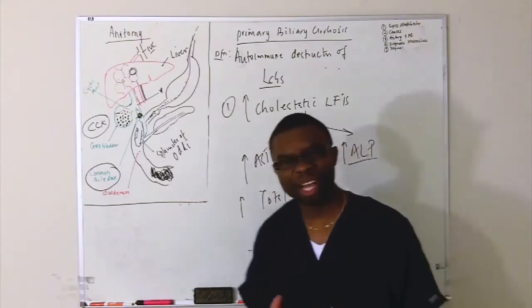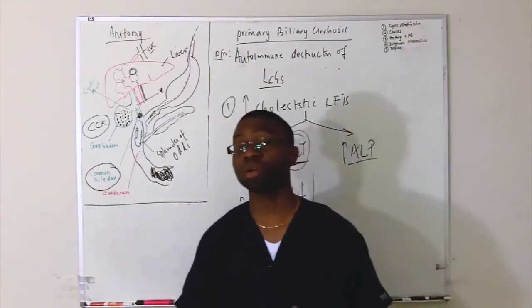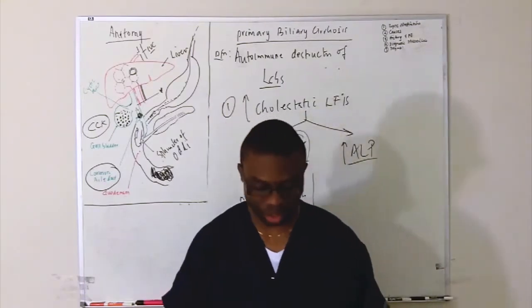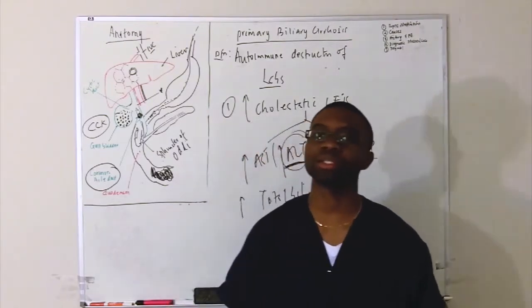Elevated total bilirubin will be high, both conjugated and unconjugated, kind of a mixed picture because it depends on how long they've had it. Usually the young middle-aged woman. But the key thing you've got to know for your boards, you've got to know this. You're going to shine in every rotation.